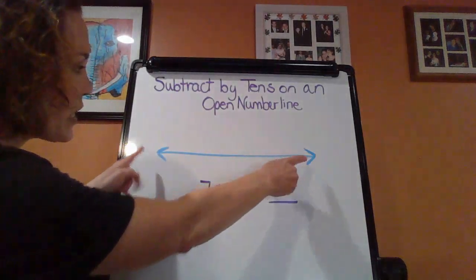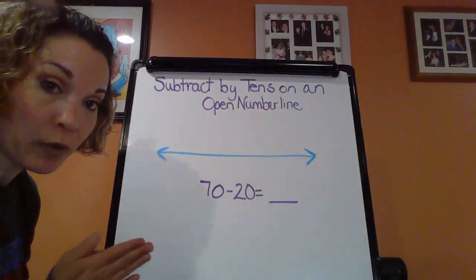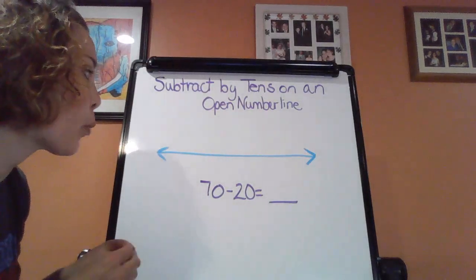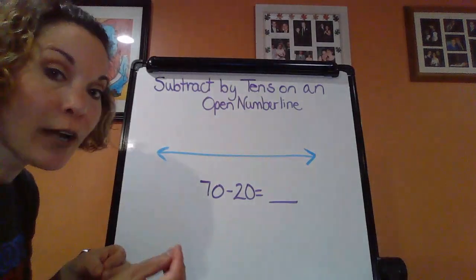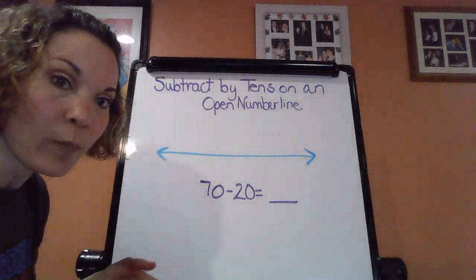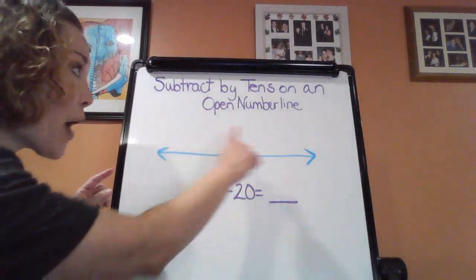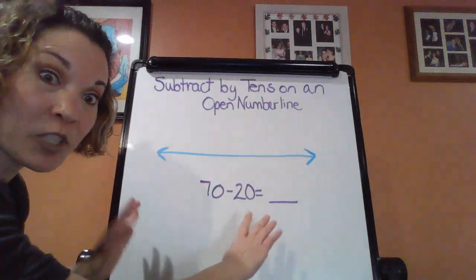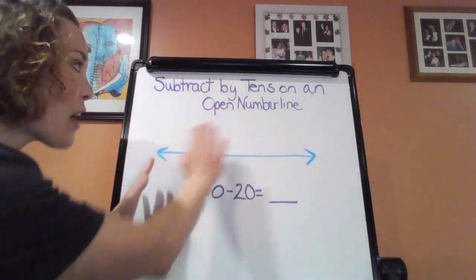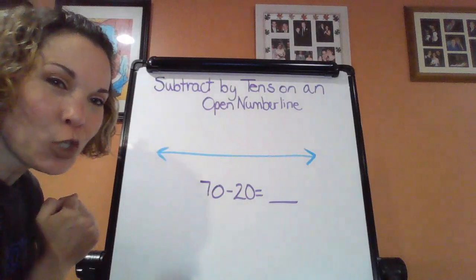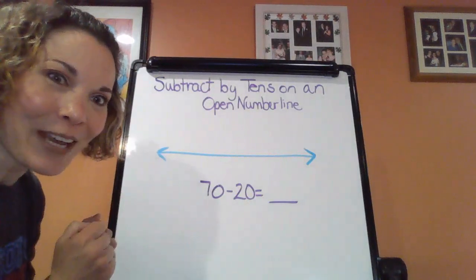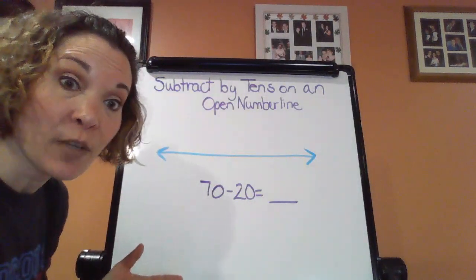So the open number lines, as you can see, are a blank number line. And the cool thing about using an open number line is you can start and stop where you need to. You're not so restricted like on a regular number line or a hundreds chart that you have to follow numbers specifically. You kind of have a little bit more room to do what you need to do quickly, especially if you don't have something like that available.